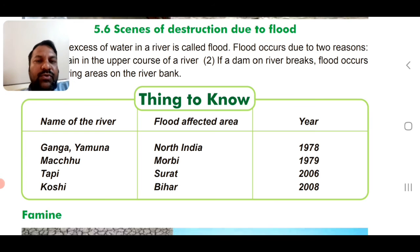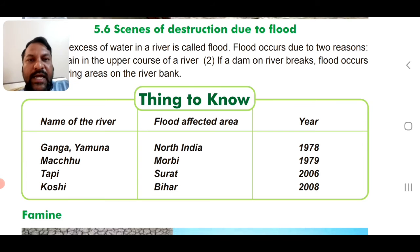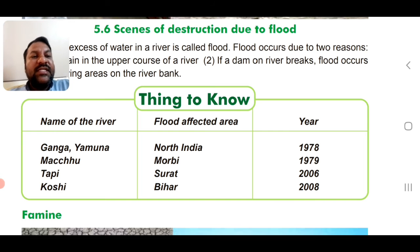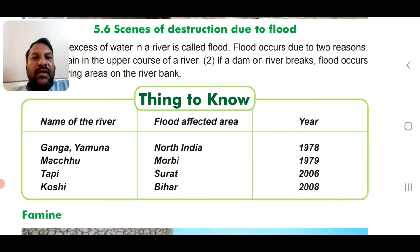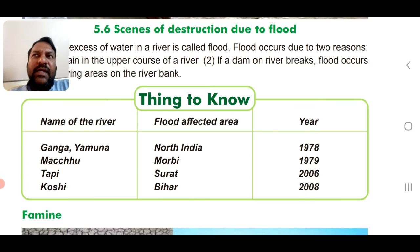Flood-affected areas in India include: Ganga and Yamuna in North India in 1978; Machu in Morbi in 1979; Tapti in 2006; and Koshi river in Bihar in 2008.